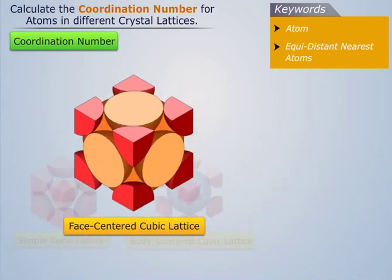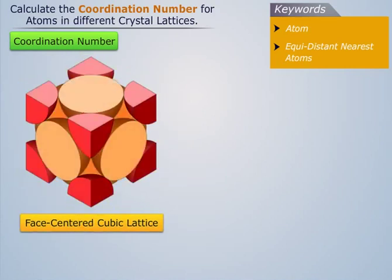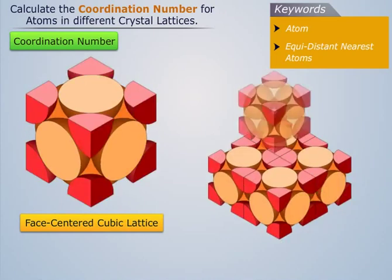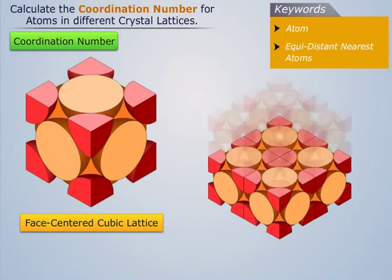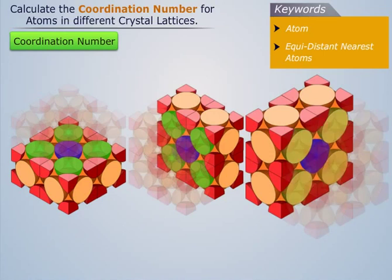We know that face-centered cubic lattice has eight corner atoms and one face central atom at the center of each of its six faces. Here every corner atom is at equal distance from face-centered atoms placed on three mutually perpendicular planes in sets of four atoms on each plane.